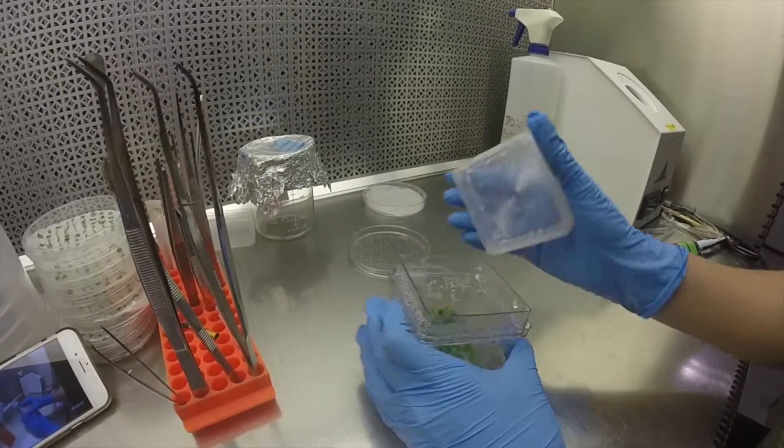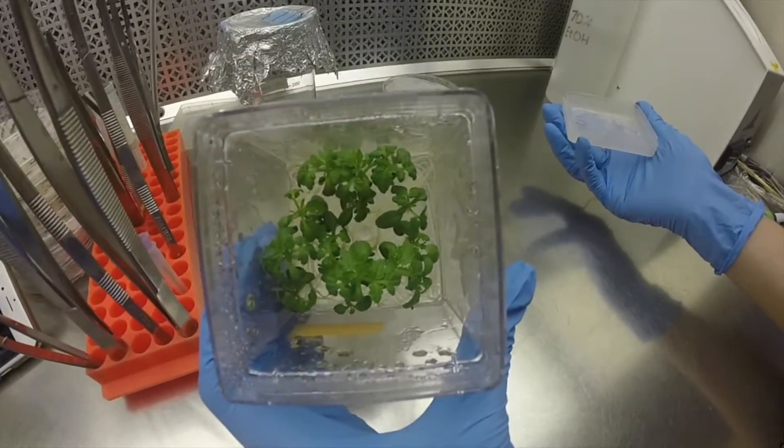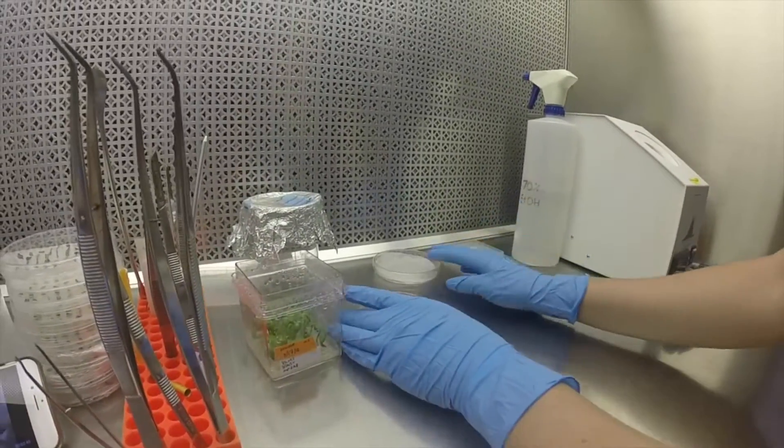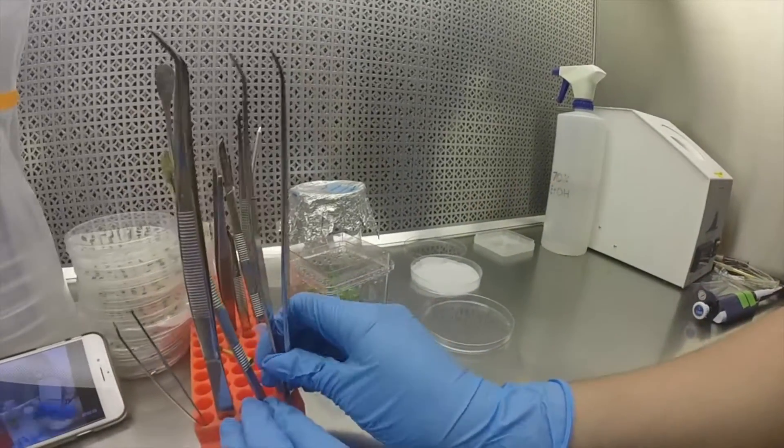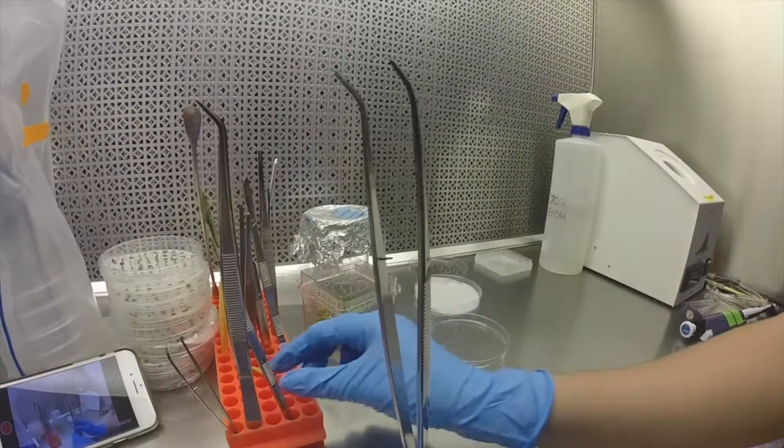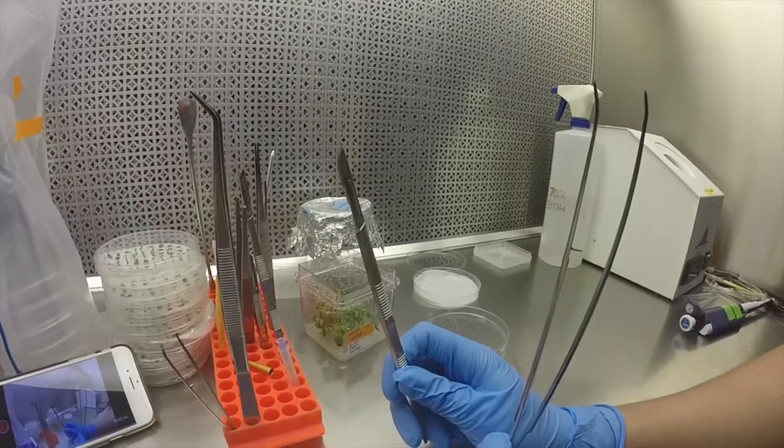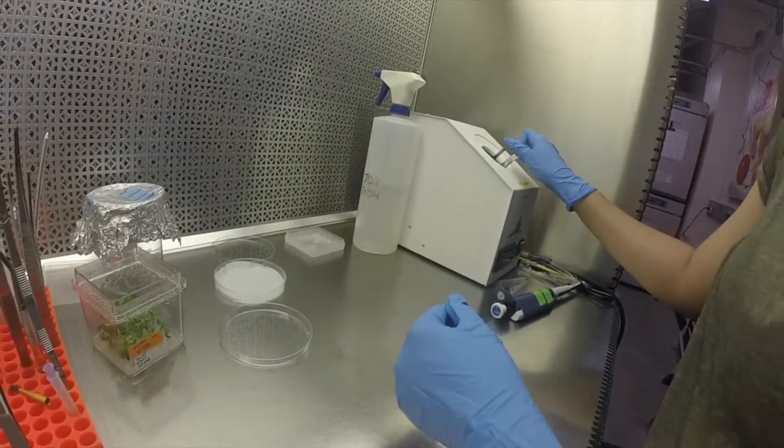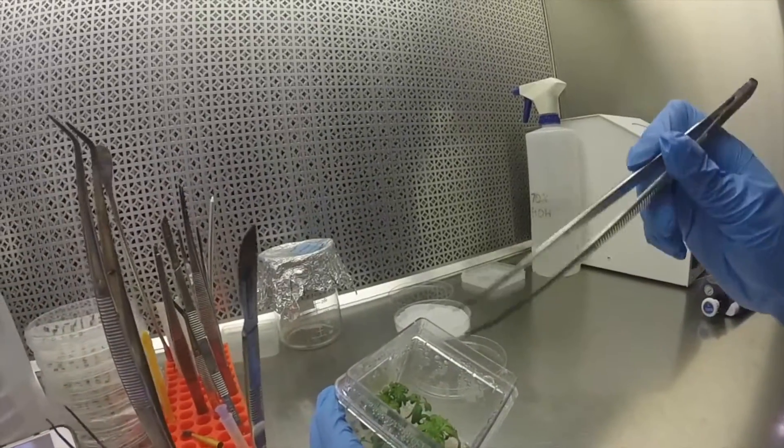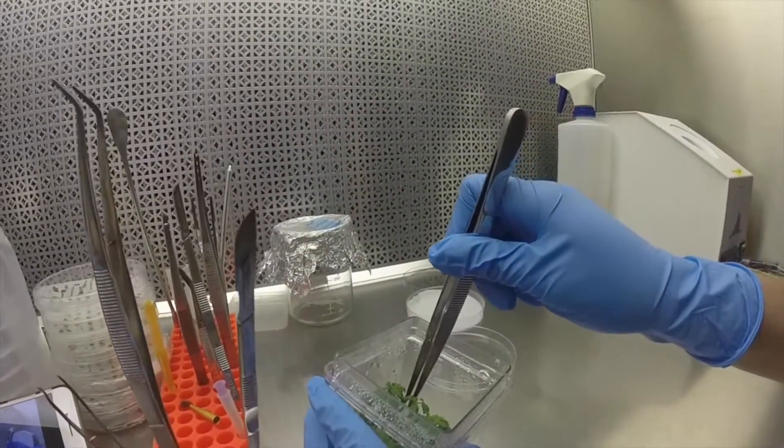From here we're going to open up our GA7. We're going to set it aside, open up our plate, grab our forceps and our scalpel blade, stick them in the bead sterilizer for 10 seconds before taking a couple plants out. We'll do them one at a time so they don't dry out.